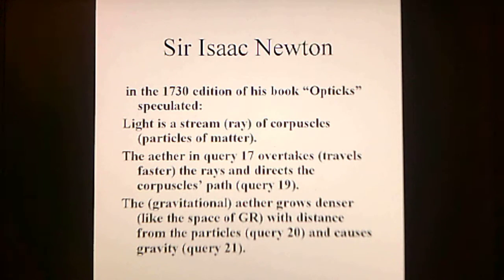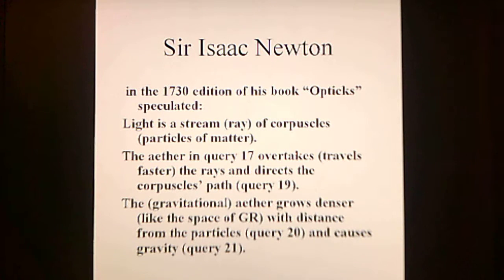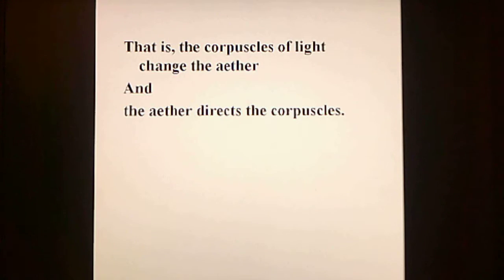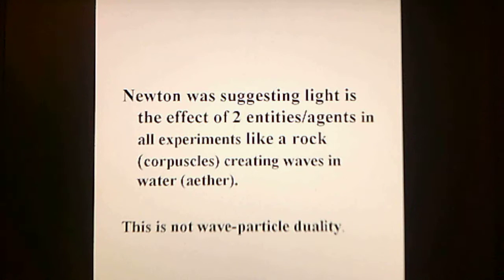Sir Isaac Newton, in the 1730 edition of his book Optics, speculated that light is a stream of corpuscles — that is, discrete particles of matter. The ether overtakes the rays and directs the corpuscles' path. The ether is a continuous medium that supports wave action, and grows denser with distance from particles, causing gravity. The corpuscles of light change the ether, and the ether directs the corpuscles. Newton was suggesting light is the effect of two entity agents in all experiments, like a rock creating waves in water. This is not wave-particle duality.